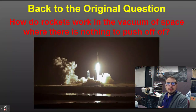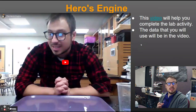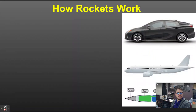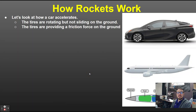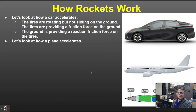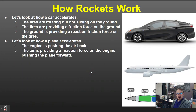How do rockets work in the vacuum of space where there's nothing to push off of? We did the Hero's Engine lab, where water poured into a cup with straws causes it to spin — very similar to how rockets work. For cars: tires rotate without sliding, providing a frictional force on the ground, and the ground provides a reaction force on the tires. For planes: the engine pushes air back, and the air provides a reaction force on the engine, pushing the plane forward.